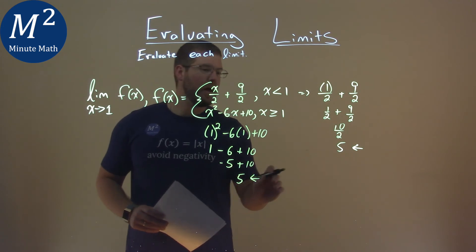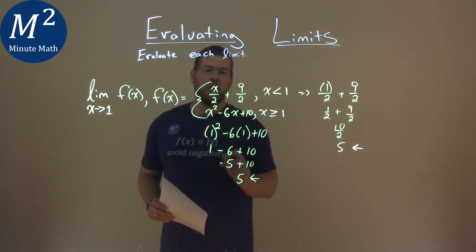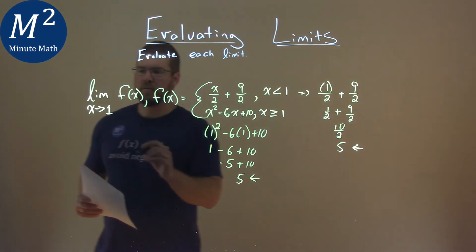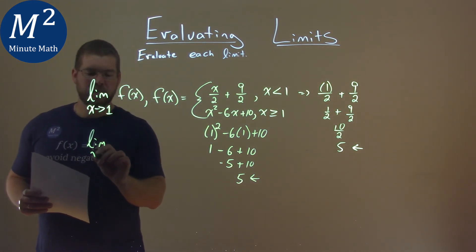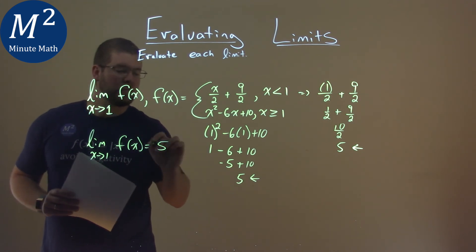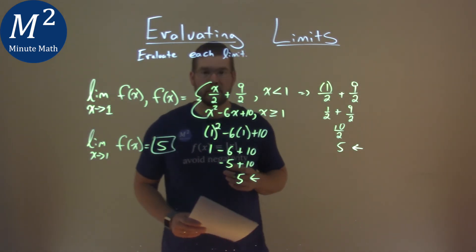So from the right and the left, we both approach 5. That means our limit, as x approaches 1 of f(x), is equal to 5. And that is our final answer.